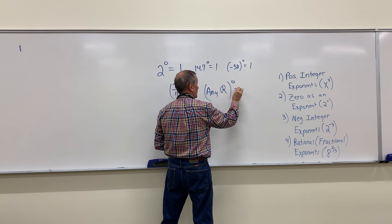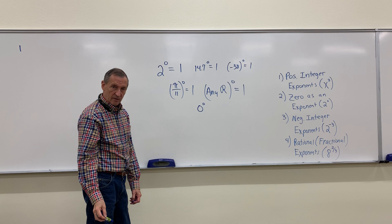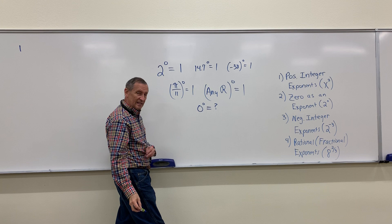Any number to the zero power is going to be one. Now you have one exception, and that is zero to the zero power. Try putting that in your calculator and it's going to give you an error, because there is no mathematical meaning for zero to the zero power. That's your one exception.